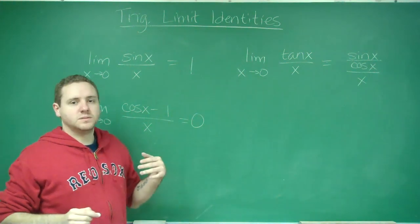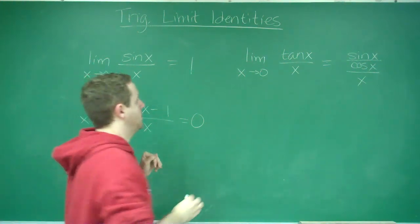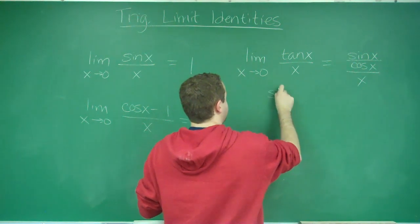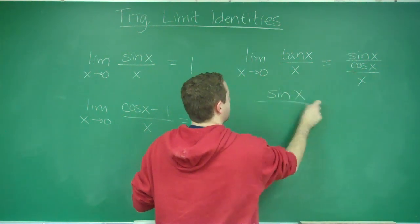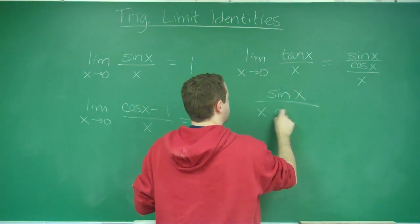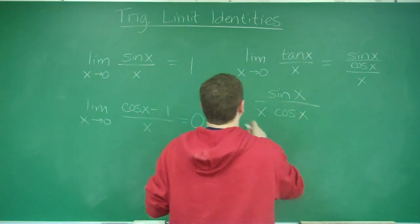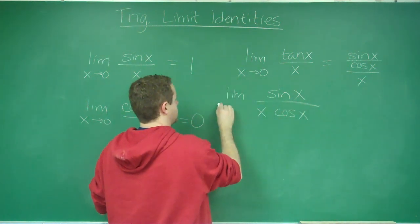And that cosine x is going to come to the bottom if you multiply by the reciprocal. So, we get sine x over x times cosine x. And we're doing this limit as x approaches 0.